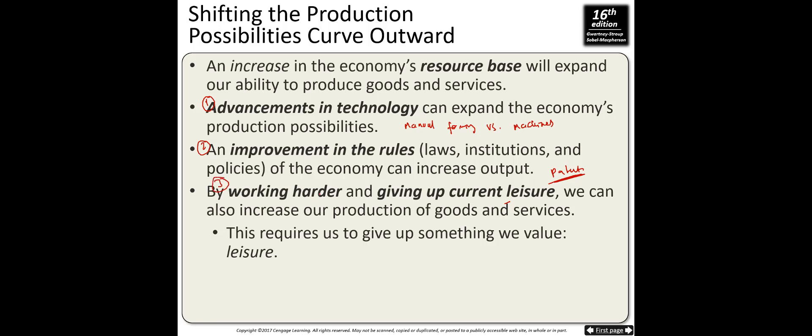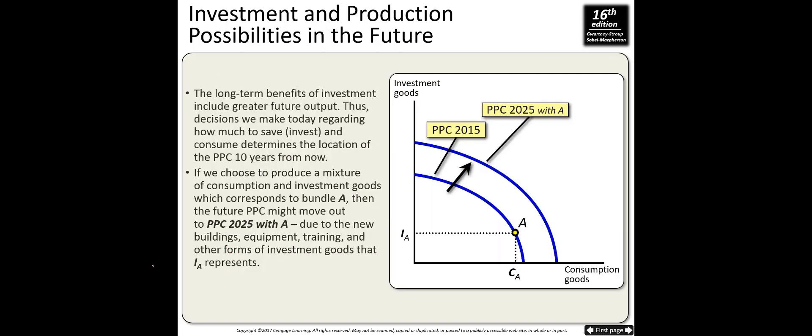Working harder is the third factor, but it has a cost — if you work hard you must give up your leisure, which is also important for human well-being. However, if everyone gives up some leisure for labor, the production possibility curve increases and shifts outward.